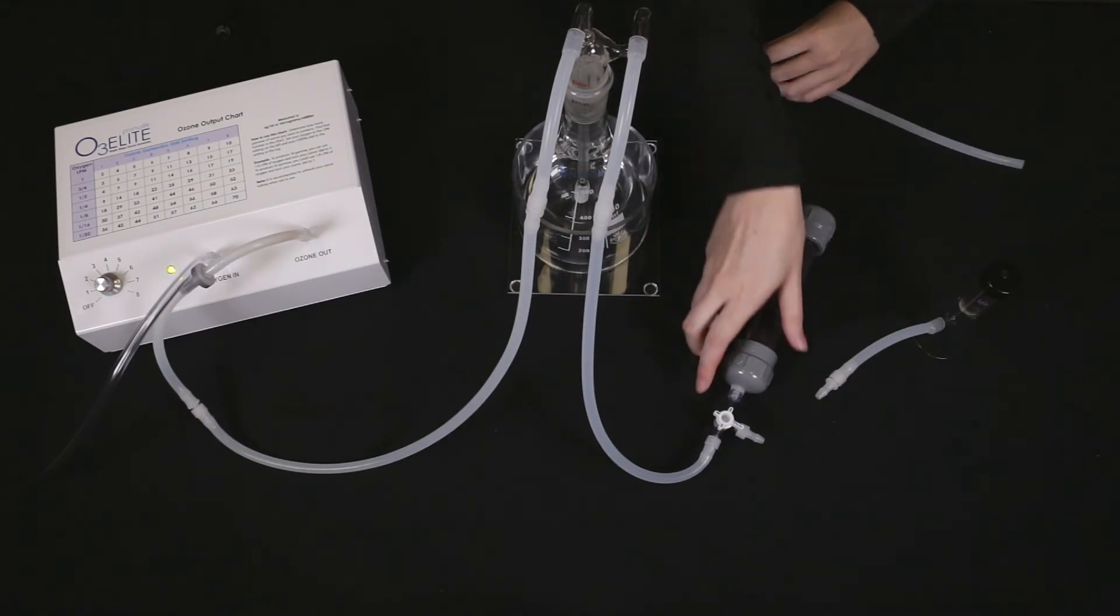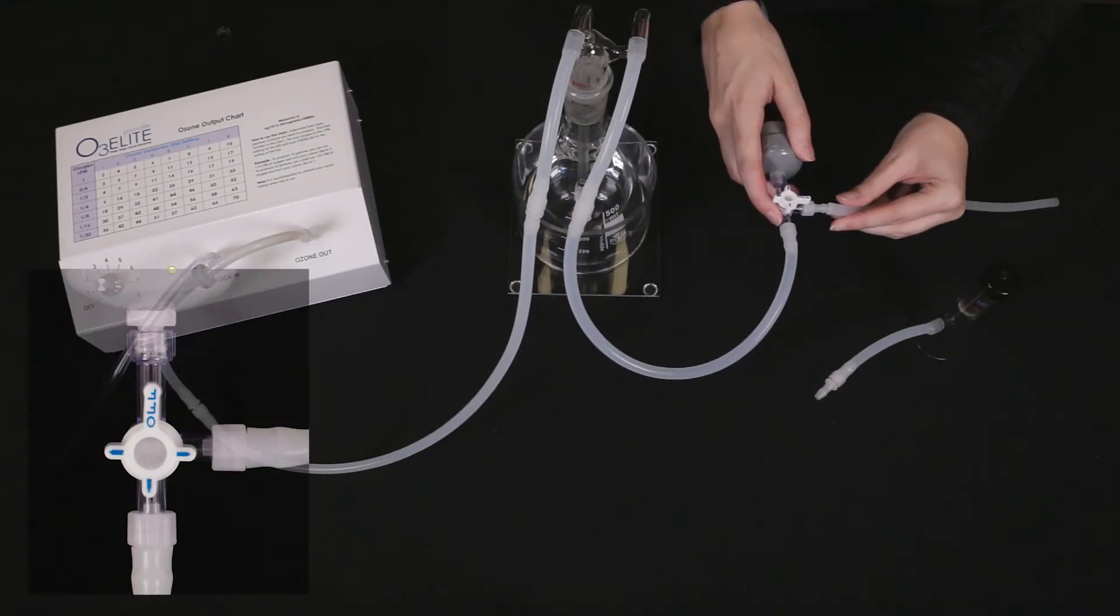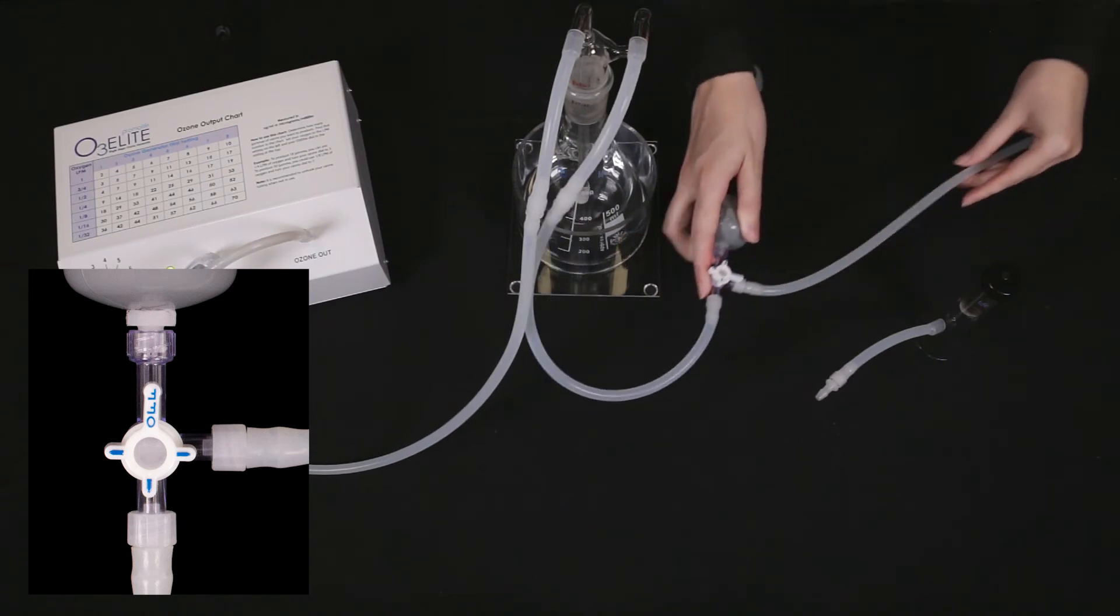Now, attach your desired accessory for humidification and make sure the off on the destruct is pointed toward the destruct system.